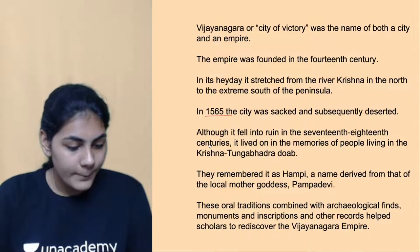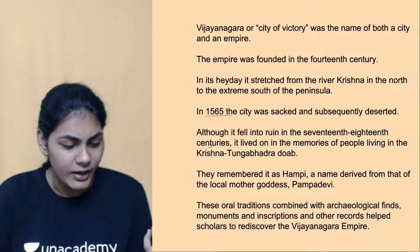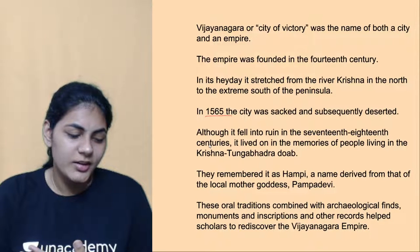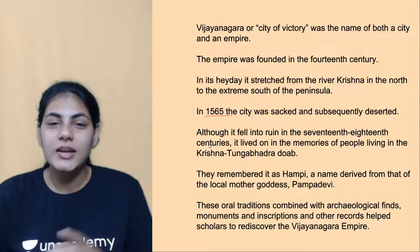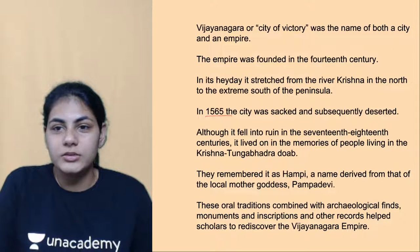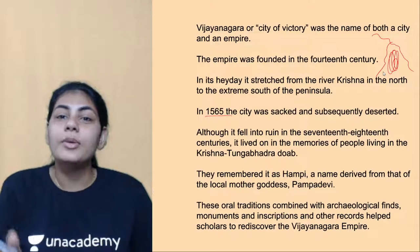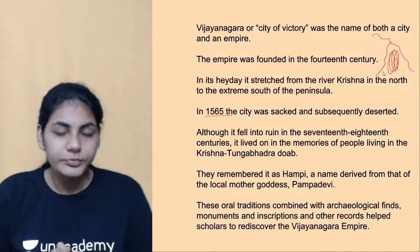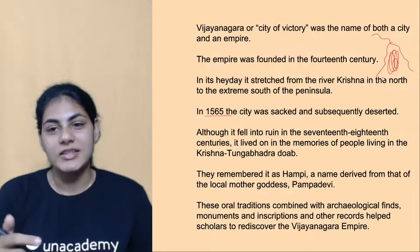Vijayanagara is situated around the Krishna-Tungabhadra doab. A doab is the land between two rivers — so between the Krishna River and the Tungabhadra River, that region is the central land of the Vijayanagara Empire. Remember these two rivers; they're very important for exams. Note that a doab is different from a river basin — don't confuse the two.